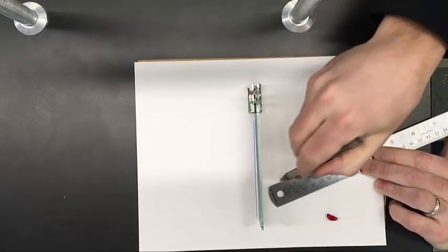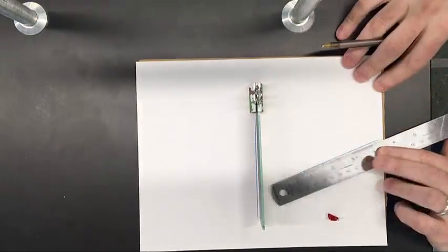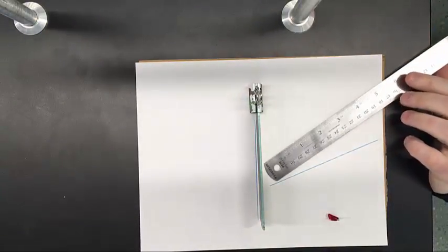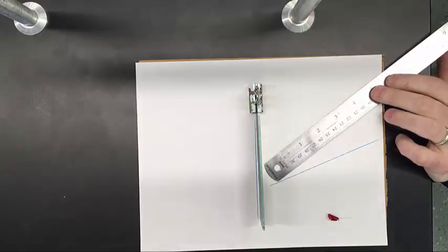And again draw three sight lines looking down that ruler, line it up with one eye only, and mark all three sight lines again as you see here.